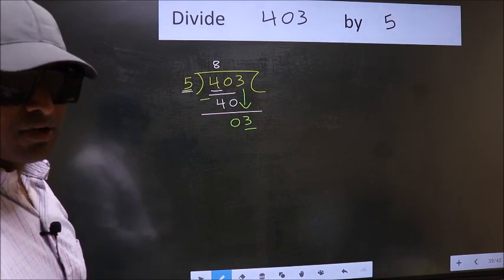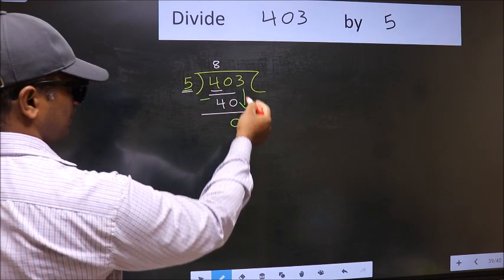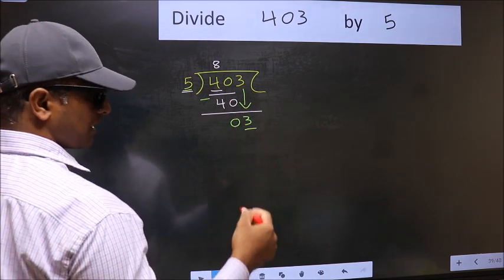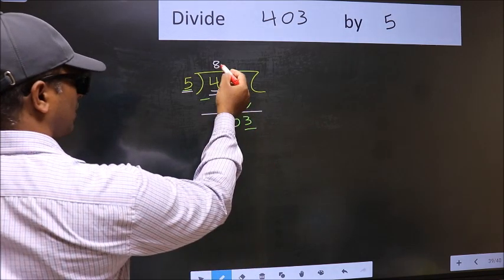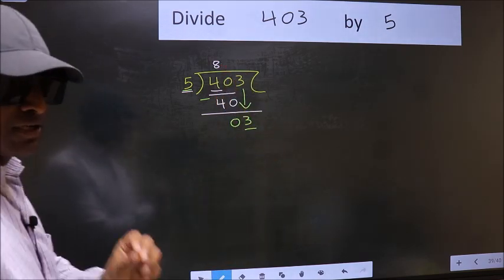Why is it wrong? Because just now you brought this number down. And in the same step, you want to put dot and take 0, which is wrong.